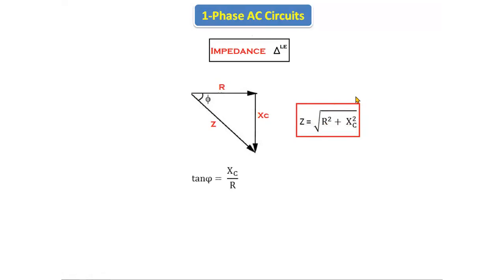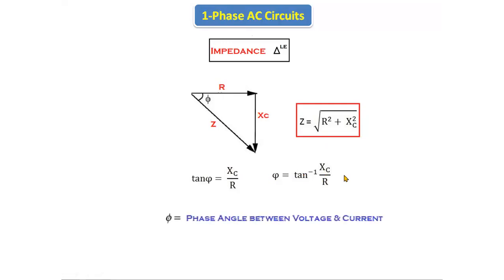Next, if we apply tan(phi) to this triangle, we get tan(phi) equals opposite side divided by adjacent side. The opposite side is Xc (capacitive reactance) and the adjacent side is R. So tan(phi) equals Xc divided by R. Therefore, phi equals tan inverse of (Xc/R). Phi is the phase angle between voltage and current. Using this formula, we find the phase angle between voltage and current of the RC series circuit.